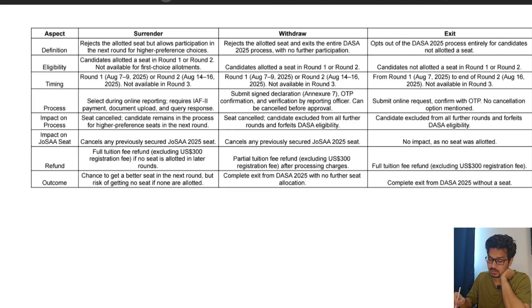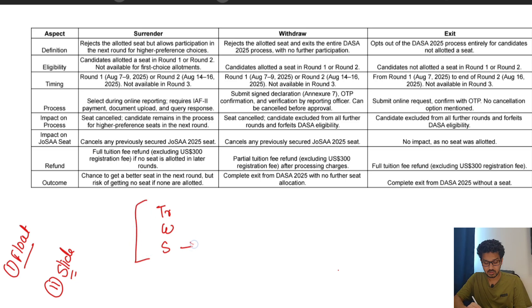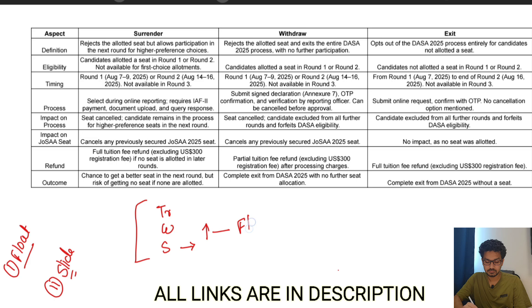The first two things are float and slide. Float basically means - let me explain with an example. Suppose you got Trichy, Warangal, and Surathkal, these three colleges, and in the first round of allotment you got Surathkal, but you want to upgrade to whatever college no matter what. So you will choose float. This is the basic meaning of float.